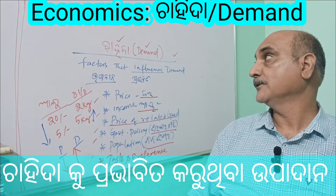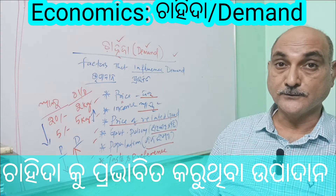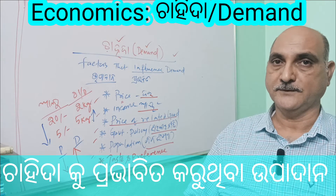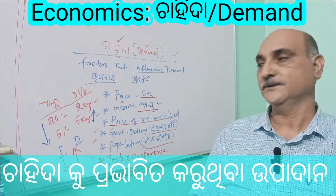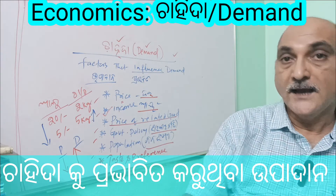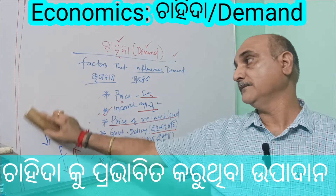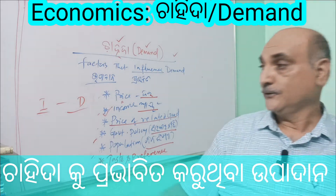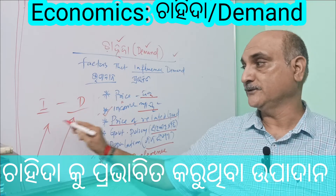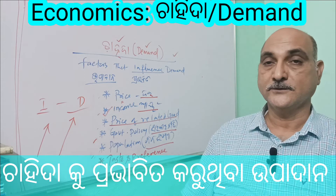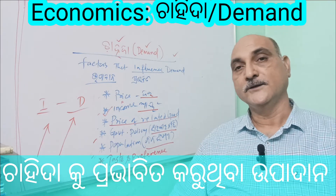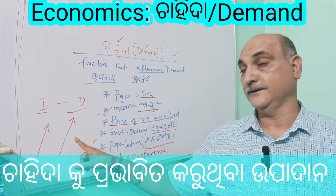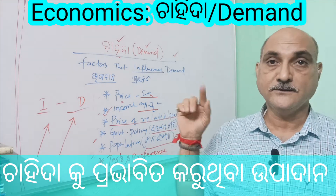The second factor is Income. Income has a direct relation with demand. If income increases, demand increases. I.O. — Income. If income rises, demand rises; if income falls, demand falls. It was a direct relation.